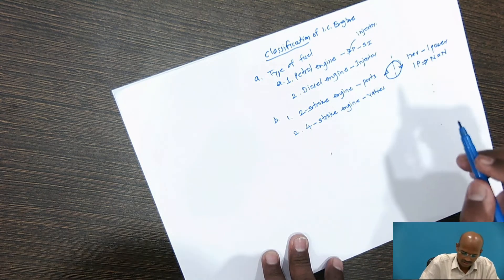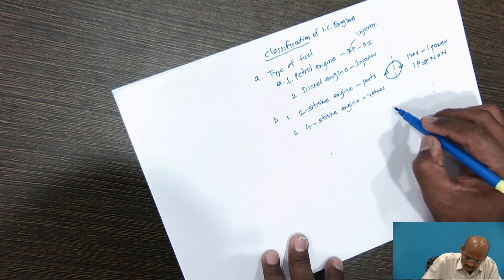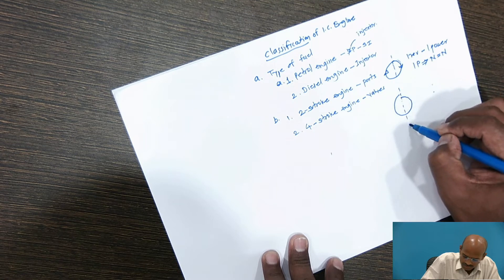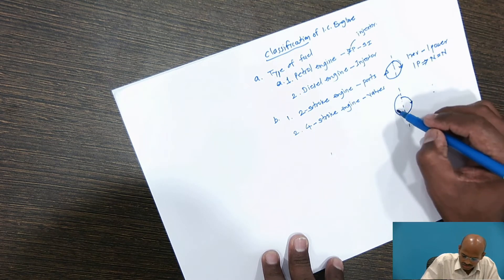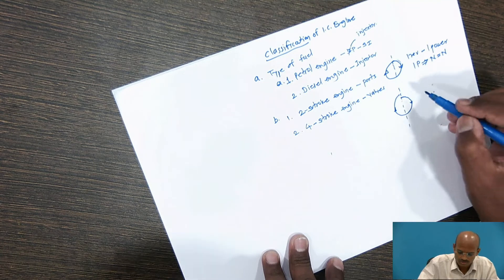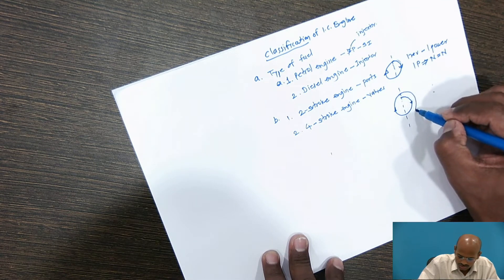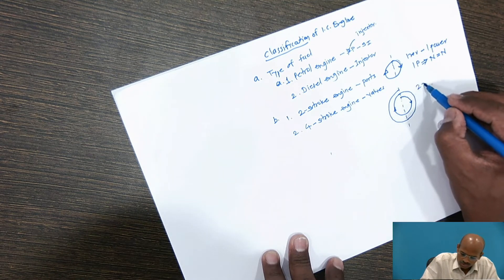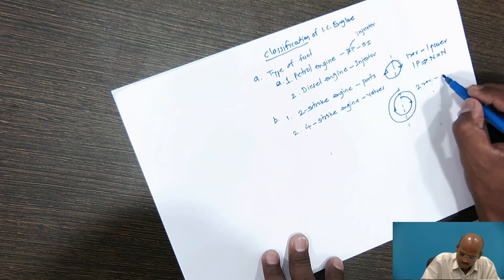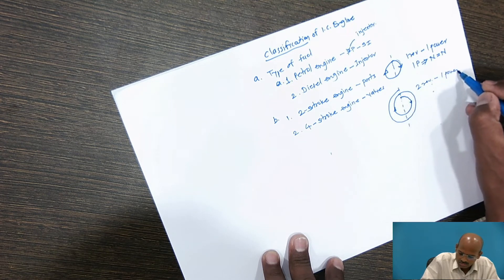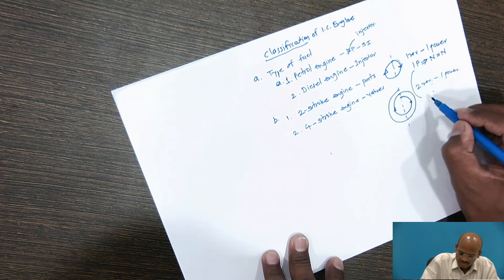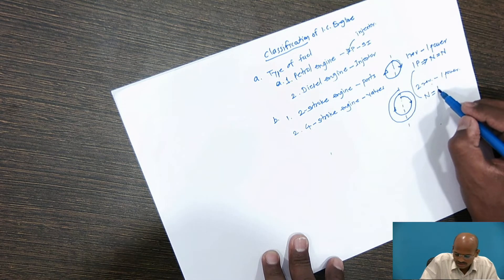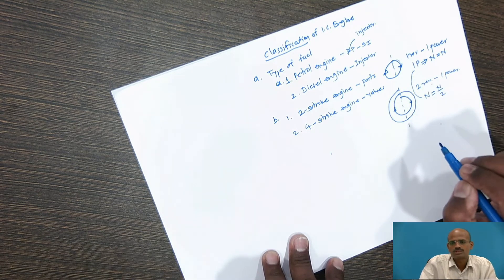In four-stroke engines, the crankshaft rotates by two revolutions. First revolution covers suction stroke and compression stroke; the second covers expansion or power stroke followed by exhaust stroke. So in two revolutions we get only one power stroke. For four-stroke engines, to calculate the indicated power, n is considered as n divided by 2 — that you have to remember.